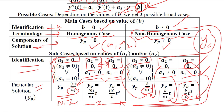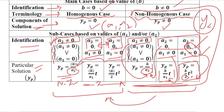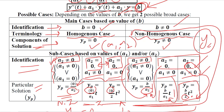The same set of formulas is used in the homogeneous case, but instead of b we have 0. So in all these cases, the particular integral yp equals 0. This is what happens in the homogeneous case — the value is only of yc, while yp disappears. This is a summary of the particular integral sub-cases for the second order differential equation.